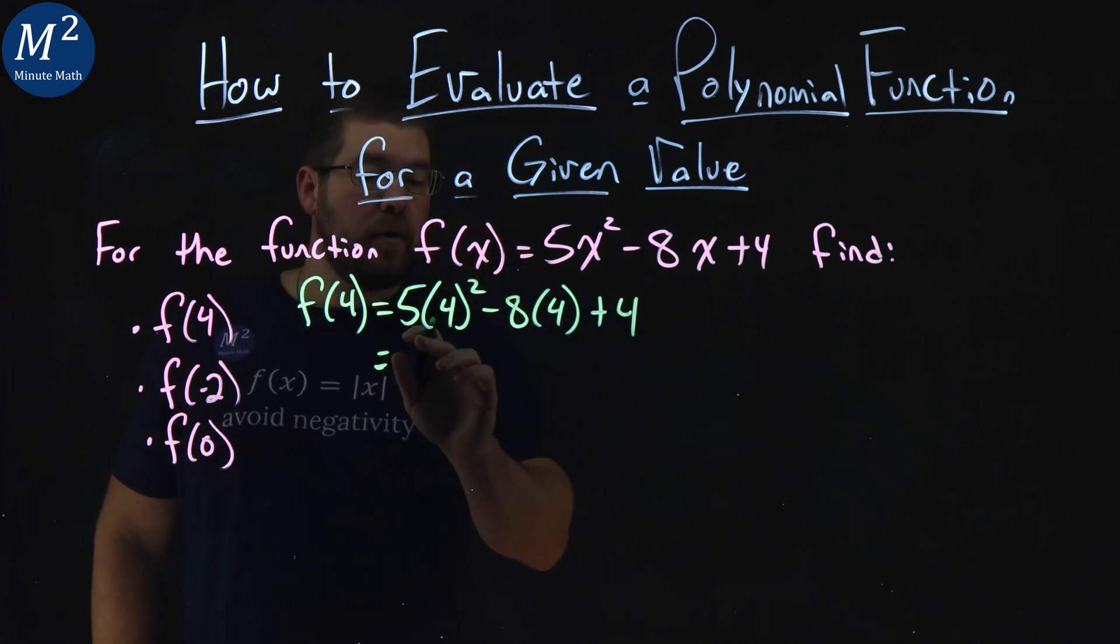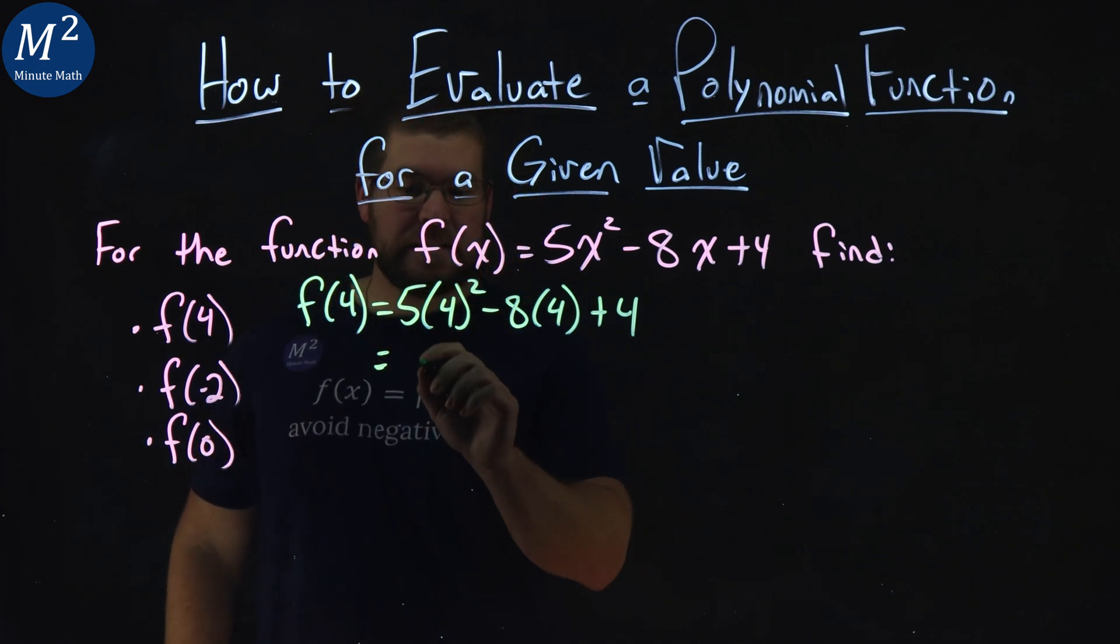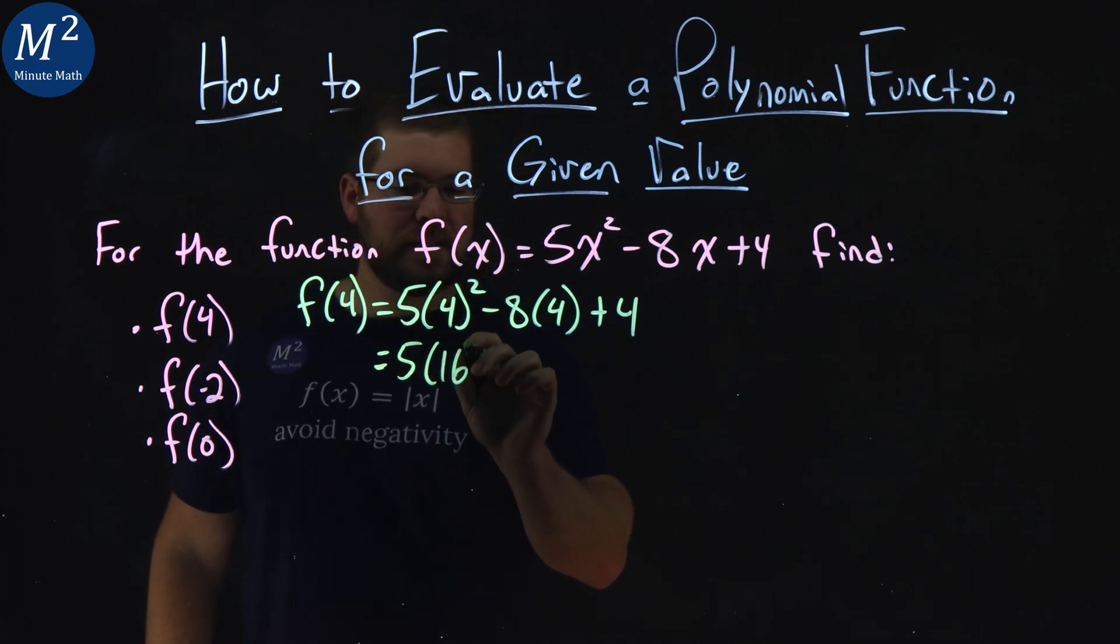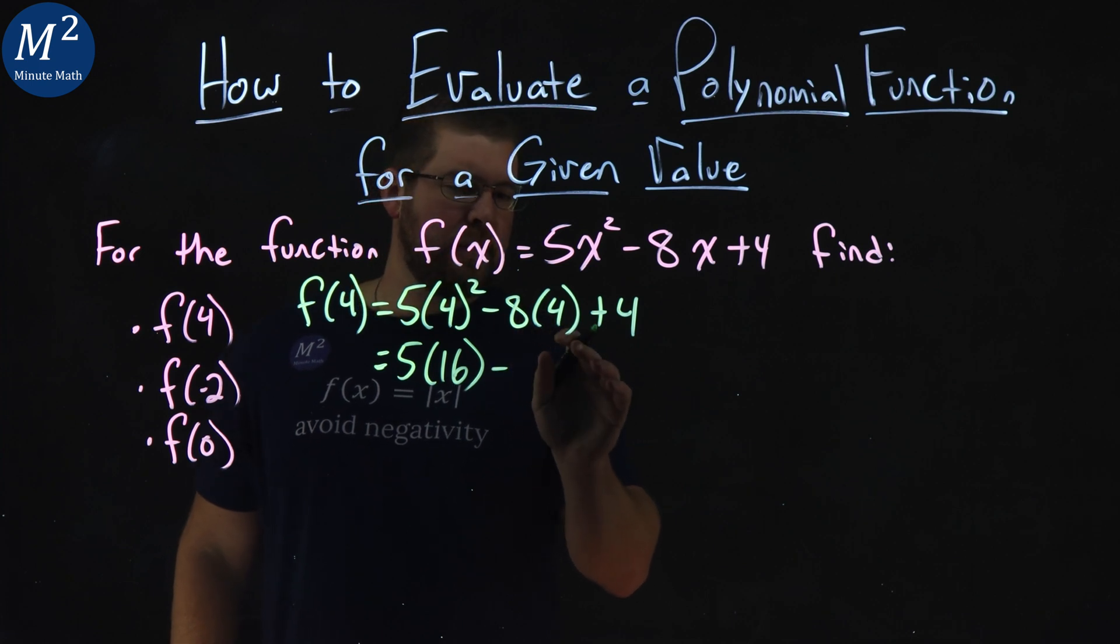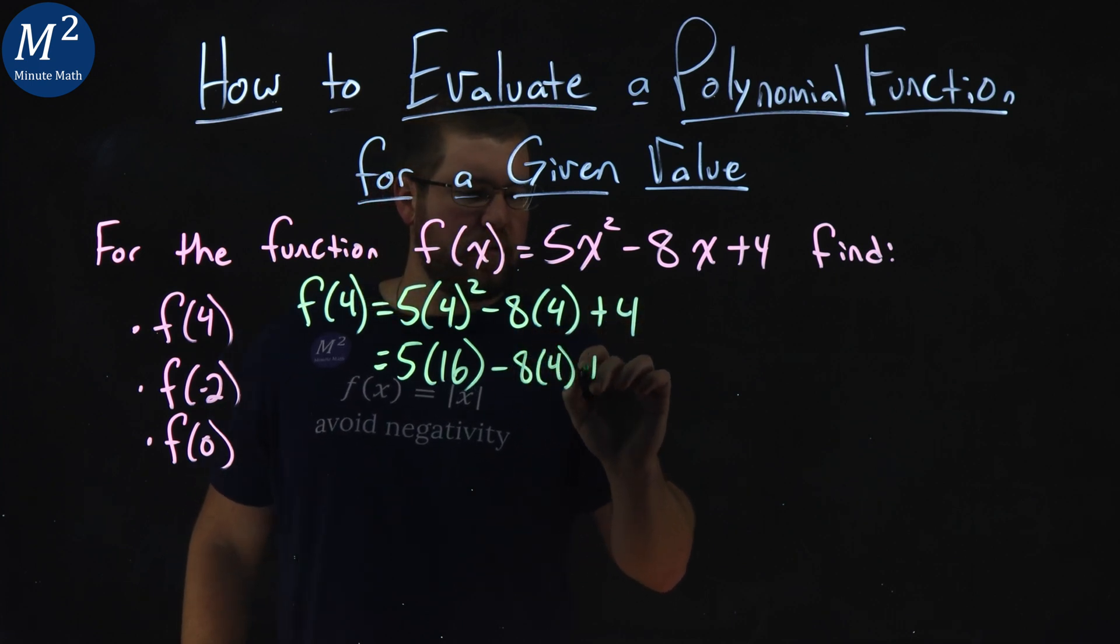So order of operations, squared comes first. 4 squared is 16. So we have 5 times 16 minus 8 times 4, which let's leave it there, we'll get it next time, plus 4.